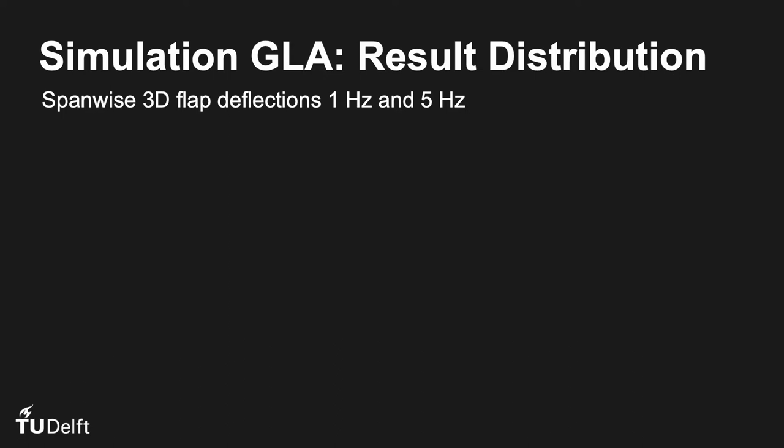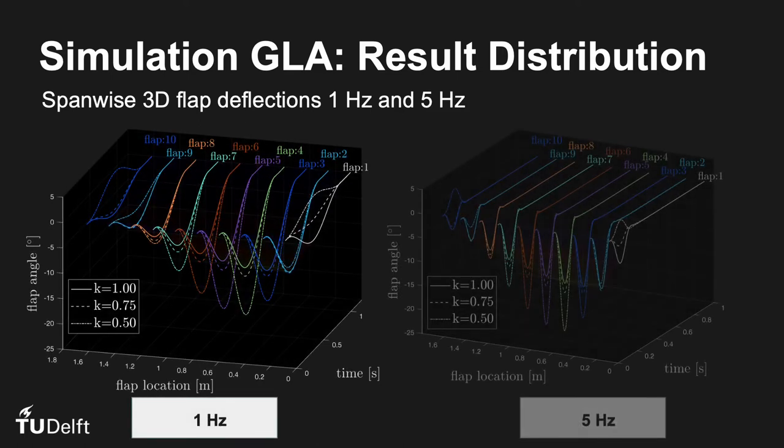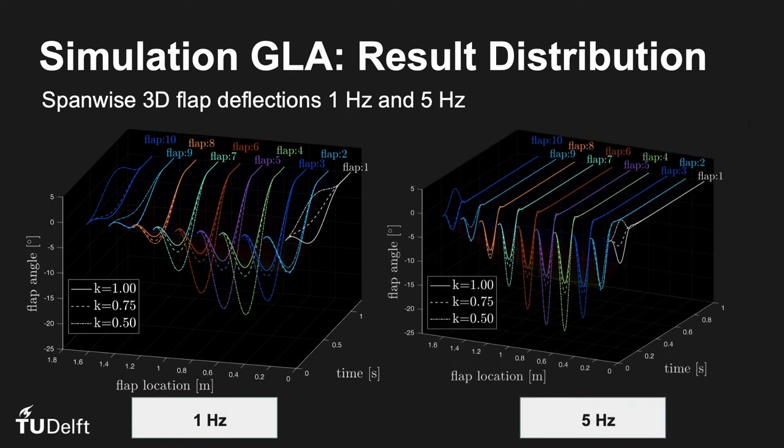It is interesting to evaluate how flaps were allocated by looking at the flap distribution in 3D. Here again, the x-axis is the span, the y-axis is time and the z-axis the flap angles. We clearly see that the lift increment is shifted inboard by allocating the flaps closer to the roots. We also see that the controller utilizes the higher bandwidth of the faster actuator more effectively. And for lower scaling, the amplitudes are higher. Thereby, it can achieve better load reduction.